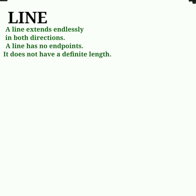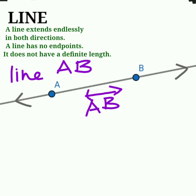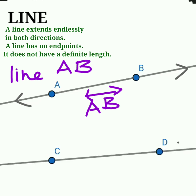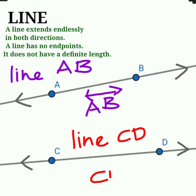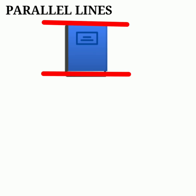A line extends endlessly in both directions. A line has no endpoints and does not have a definite length. Examples: line AB, line CD. Parallel lines — some examples include the opposite edges of a notebook.